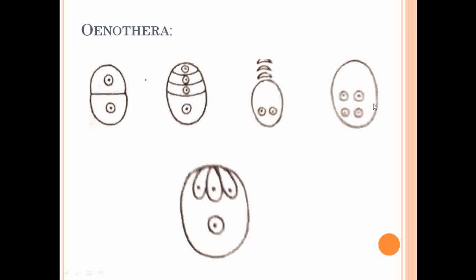After the four-nucleate stage, nuclear division stops and these four nuclei arrange the embryo sac. Three of the nuclei at the chalazal end move towards the micropylar end and function as the egg apparatus, while the single remaining one at the chalazal end moves to the center and functions as the secondary nucleus. This type of embryo sac is observed in Oenothera.